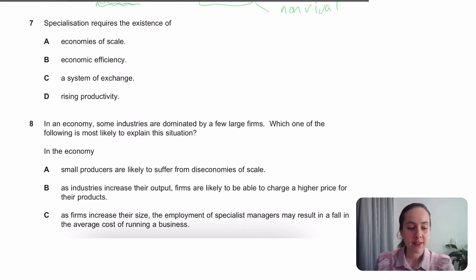Specialisation means that you produce only pencils, only pens. And you will have a really difficult time paying your suppliers, paying your workers, and actually just getting money for selling the pencils and the pens, unless you have money to trade the pens for. So we're looking for a system of exchange.